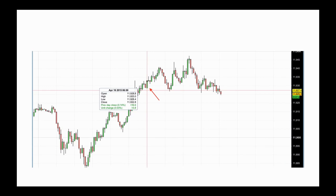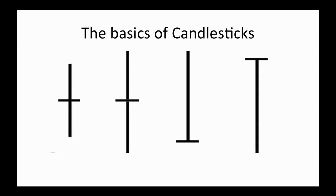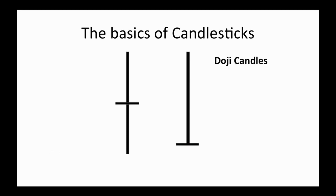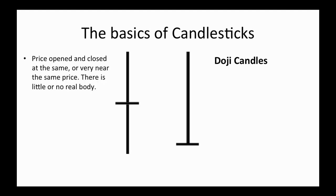You'll also see another type of candle on your charts — they're known as doji candles. These candles have little or no real body. What a doji candle is telling you is that price opened and closed at the same or very near to the same price. So although the price may have moved quite significantly during the time period, it closed back on or very near to its opening price.